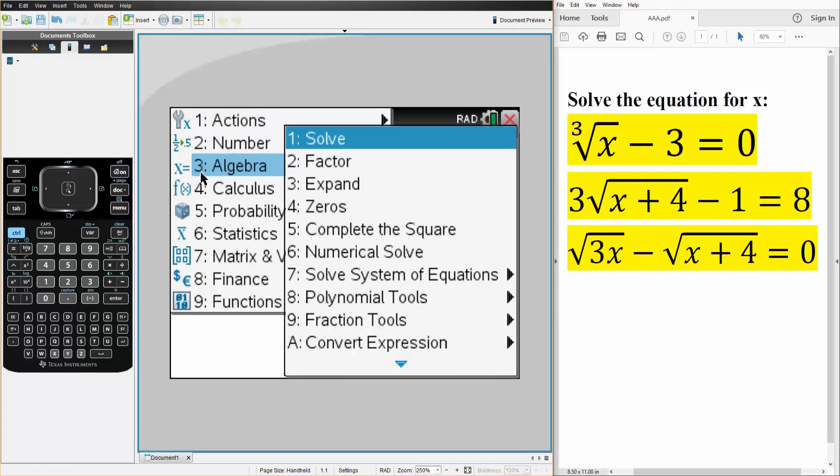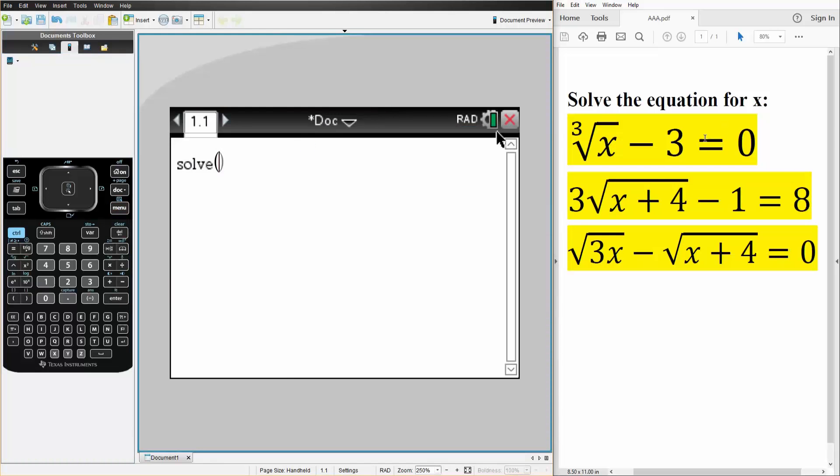We hit Menu, we hit Algebra, we hit Solve, and we write what we have. So we hit Control, Carrot. This will give us this template right here.